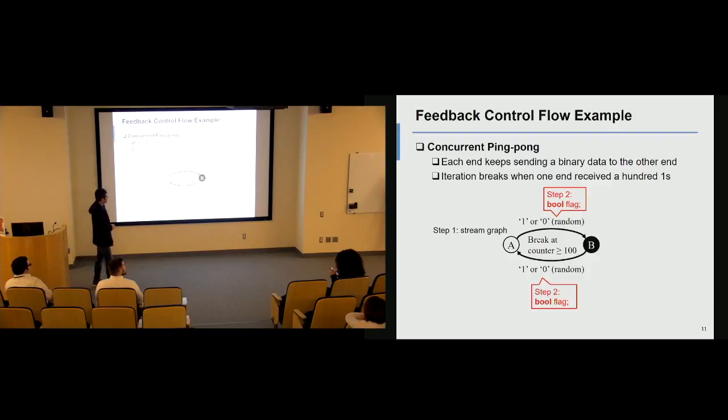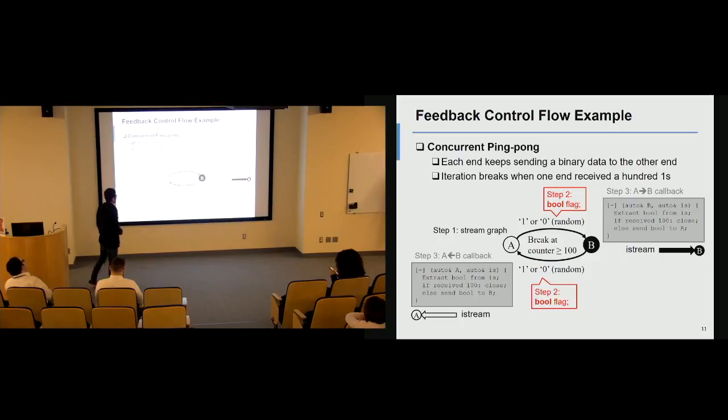The second step is to decide the data type. Because we send random binary data, the data type is a boolean number. Then I will define a computation callback. This is symmetric because the program is symmetric, so the computation callback is the same for both sides, A and B. The computation is: once data is ready, I extract a boolean from the underlying input stream. If I already received 100 ones, then I close the underlying channel. Closing one channel will automatically force the other end to be closed.